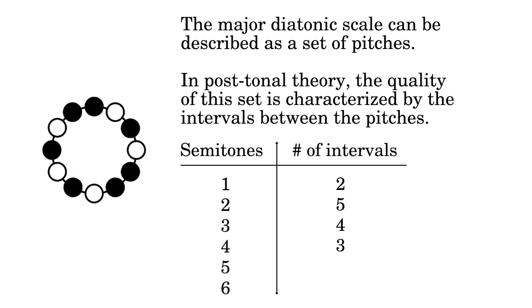There are three major third intervals with four semitones, here, here, and here. With five semitones, also called a perfect fourth, we can find six intervals, here, here, here, here, here, and here.